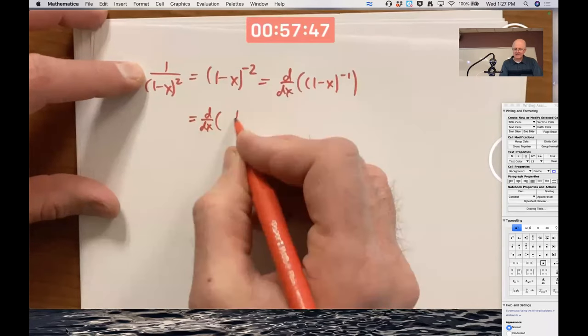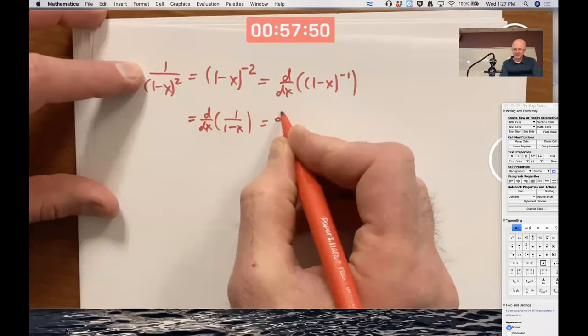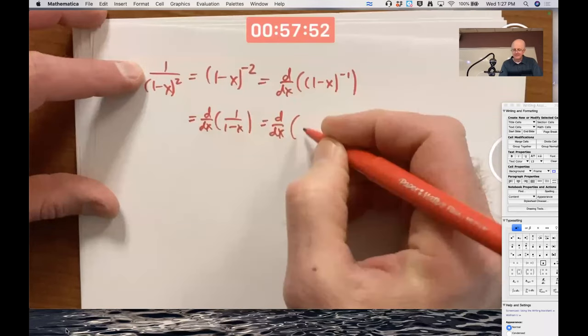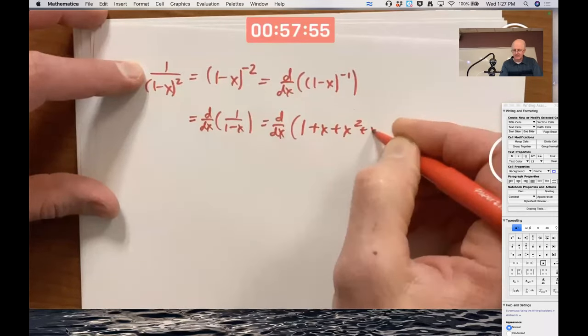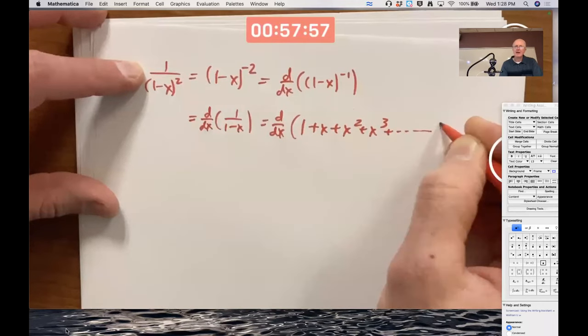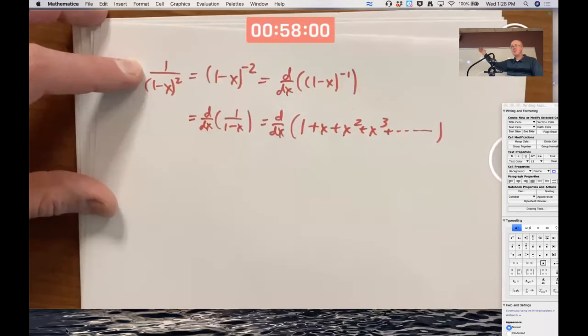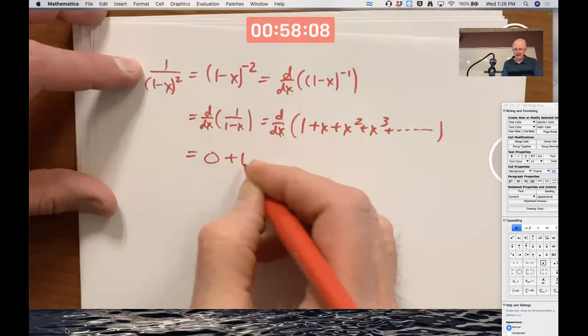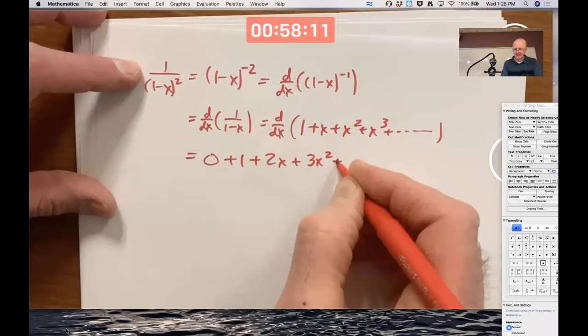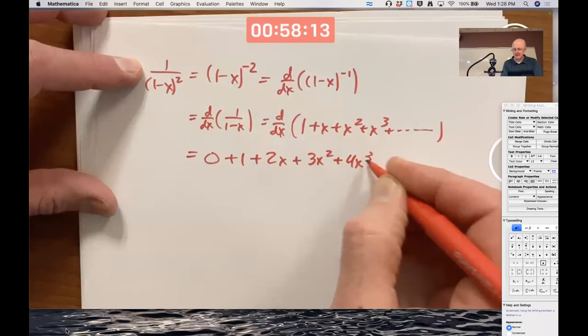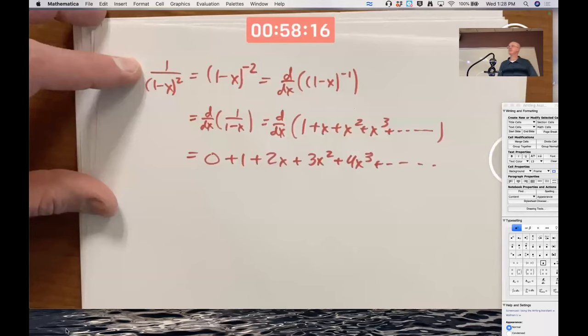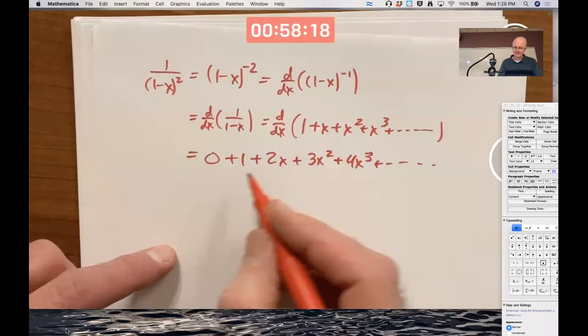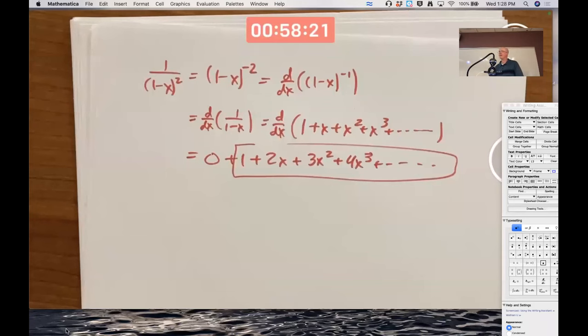One minus x to the negative one power is the same as one over one minus x, and that's the sum of a geometric series. We integrated term by term. Was it Monday or was it last Friday? Now we're differentiating term by term. And yeah, the next term would be 4x cubed. Same answer. We did it three different ways. Same answer.